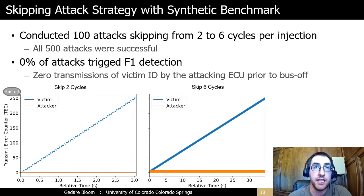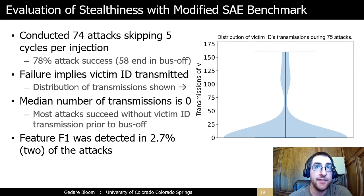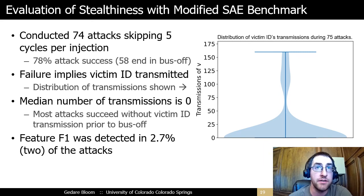The plots show the TEC increases over time for the victim and attacker for the two extremes of skipping two cycles versus skipping six cycles. The attack takes ten times longer to succeed when six victim messages are skipped between each injection. With the SAE benchmark, I conducted 74 attacks skipping five cycles between injections. Fifty-eight of those attacks succeeded in the victim becoming bus-off. Investigation of the 16 failures suggests the attacker lost synchronization with the victim. The violin plot shows that the majority of attacks still exhibited no transmissions of the victim's message ID; however, feature F1 was detected in two of the attacks, indicating some repeated retransmissions occurred.